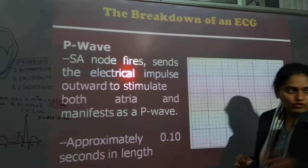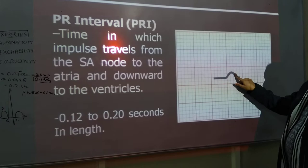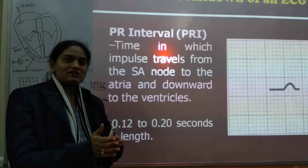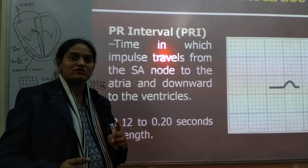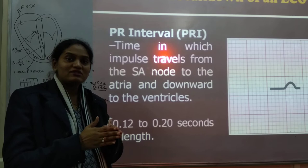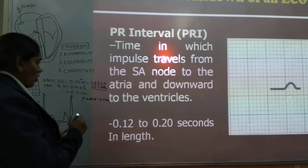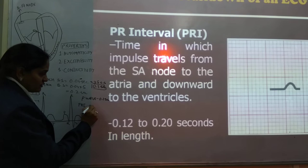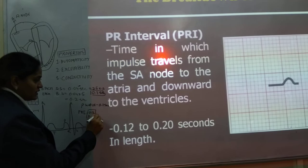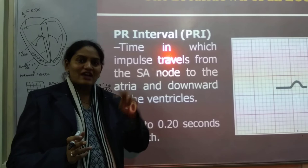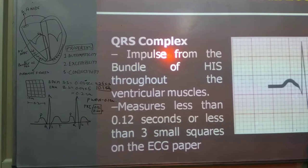Next, we move to the formation of the PR interval. As you can see, this is P and this is R. The PR interval gives the time that the impulse takes travelling from the atria towards the ventricles. While the P wave gives information about atrial contraction, the PR interval tells us how much time the impulse takes between atrial contraction and ventricular contraction. The time period is 0.12 seconds to 0.20 seconds, or 3 to 5 small squares.